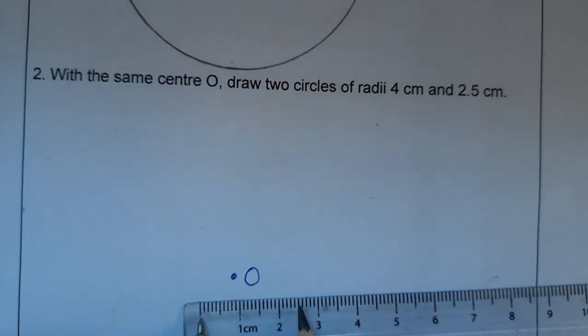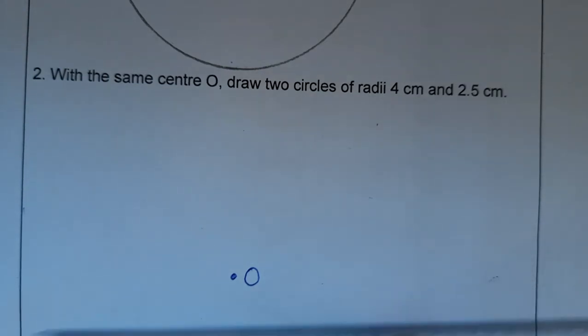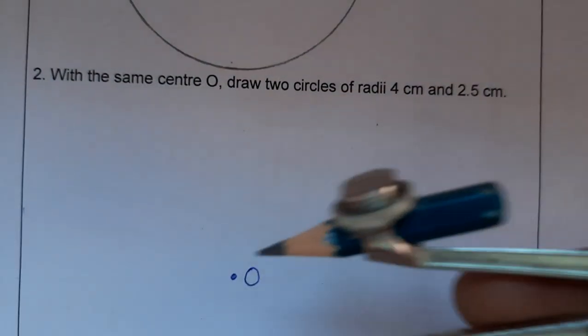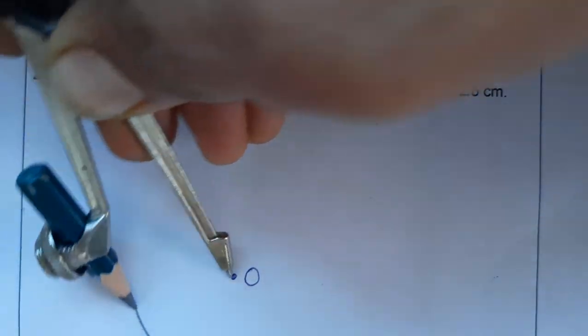This is 2.5. See, the pencil pointer is here on point 2.5 and this is on 0. So now put it on center O and we are going to make a circle.